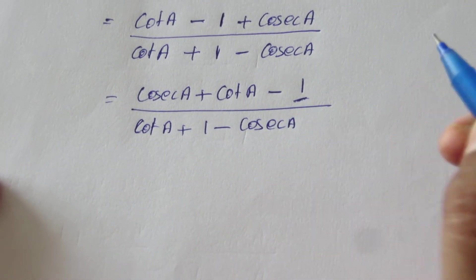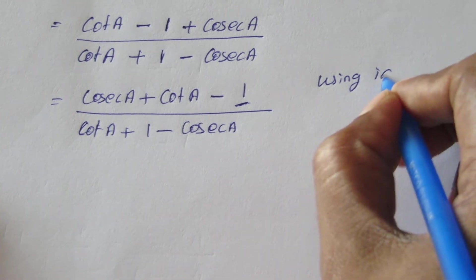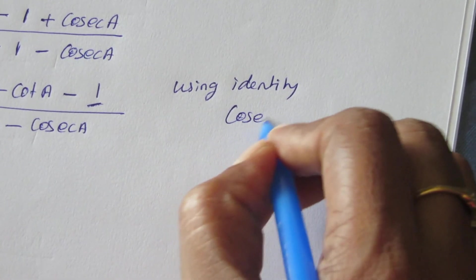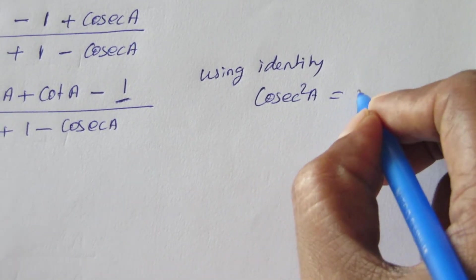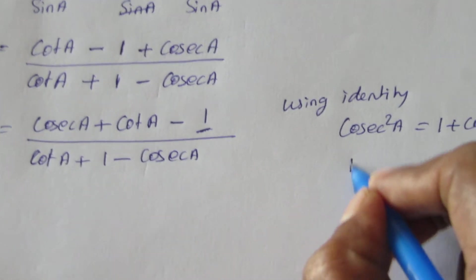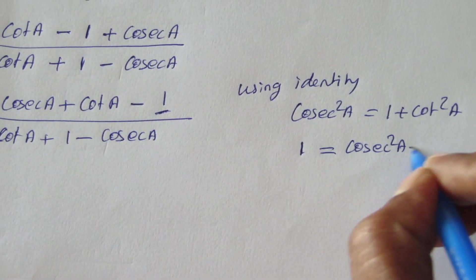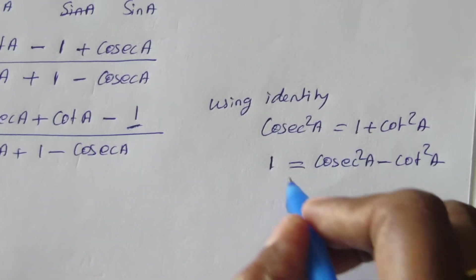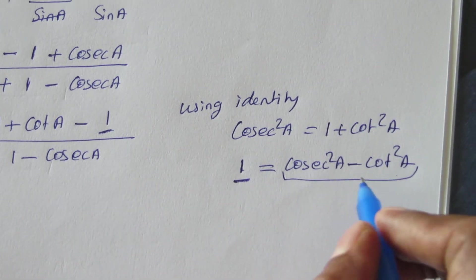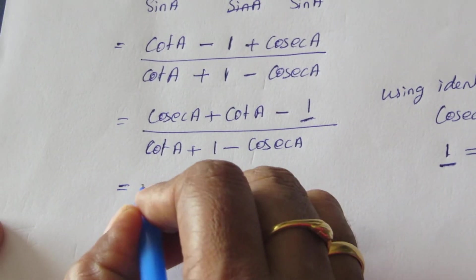Here we are using the identity: cosec squared a equals 1 plus cot squared a. Therefore, 1 equals cosec squared a minus cot squared a. So we substitute this value of 1 into our expression.